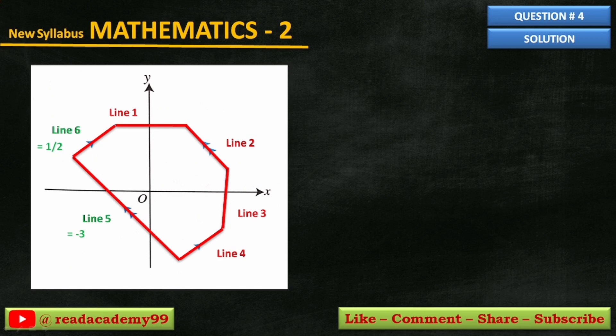So, we have the gradients of line 5 which is minus 3 and line 6 which is 1 by 2, and we need to find the gradients of line 1, 2, 3, and 4.